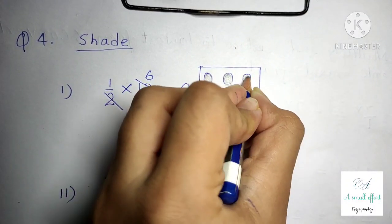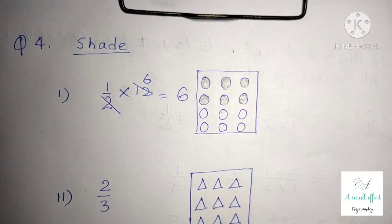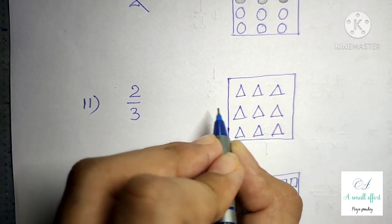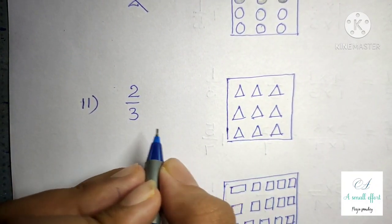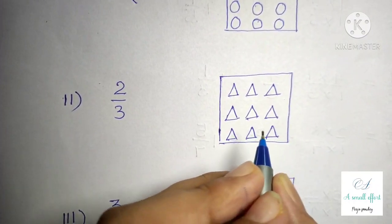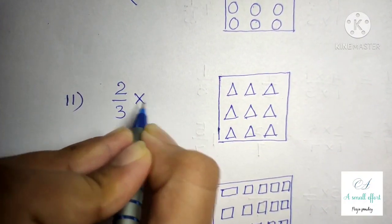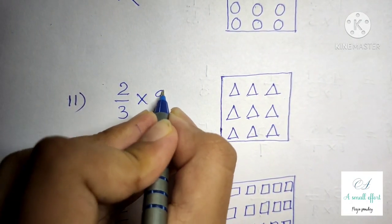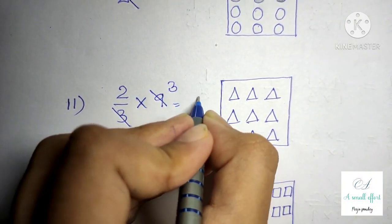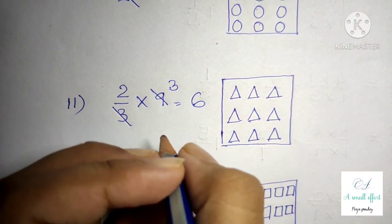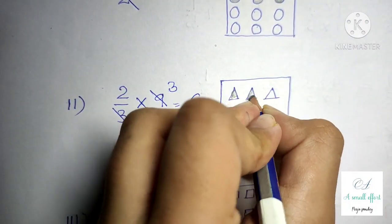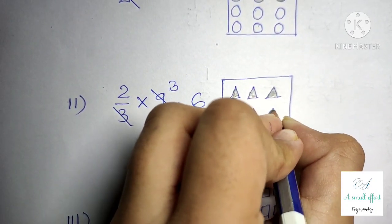We have to shade 6 of the given circles. Question number 4 part 2 is 2 by 3 of the given triangles. To find how many triangles to shade, we multiply 2 by 3 into the number of triangles given in the box, which is 9. In the 3 times table, 9 comes 3 times, so 3 twos are 6. This means we have to shade 6 triangles in the given box.